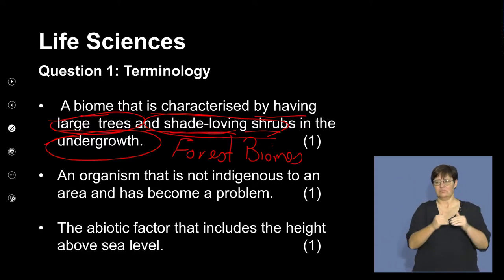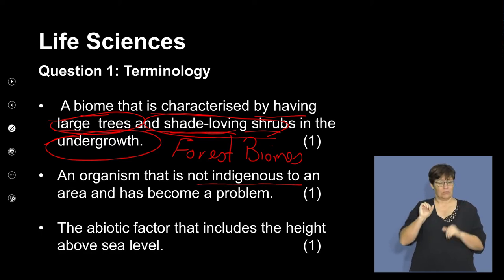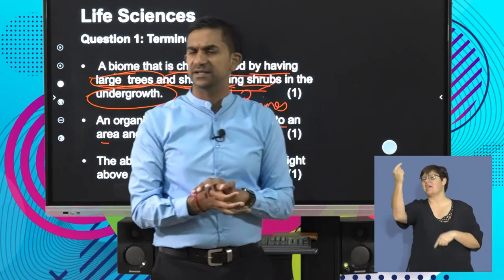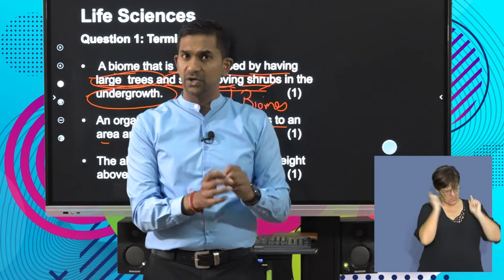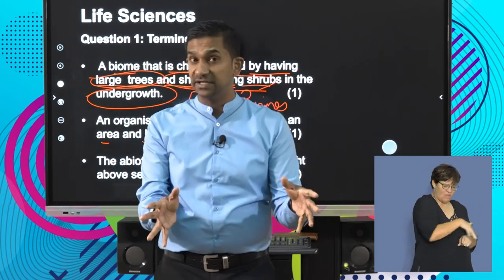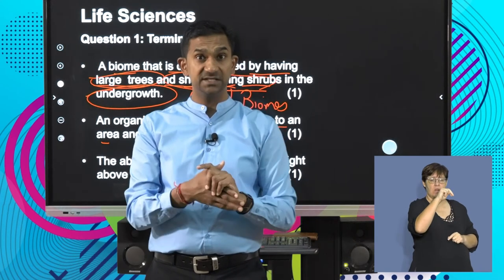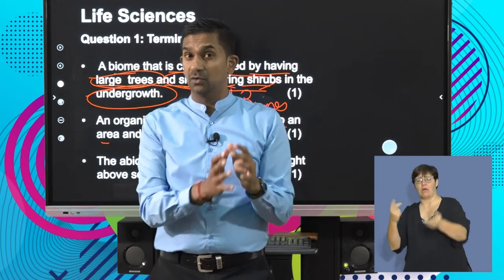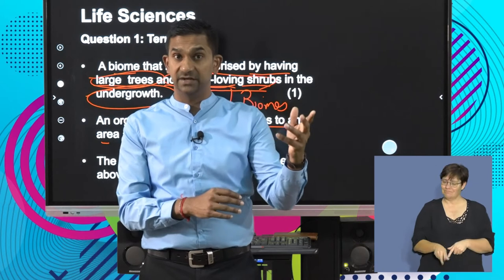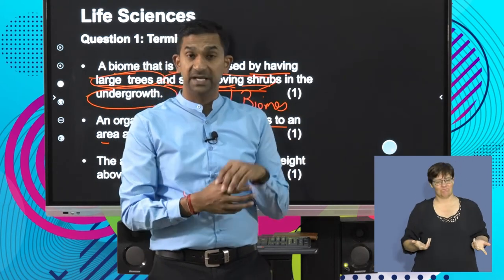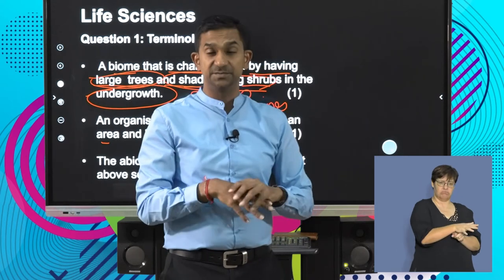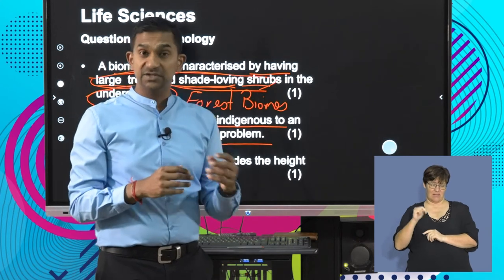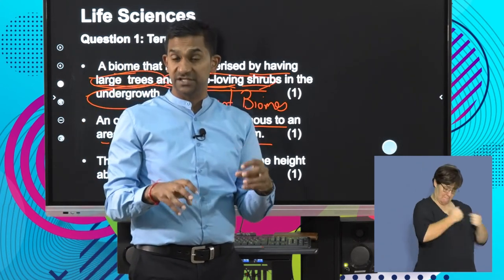An organism that is not indigenous to an area but has become a problem. This refers to species not naturally found in an area. Plants and organisms naturally found in an area are called indigenous species. However, species of plants and animals that have been brought in — accidentally or intentionally — from other areas are not naturally found there. These organisms often affect the indigenous species, and we refer to them as alien species.